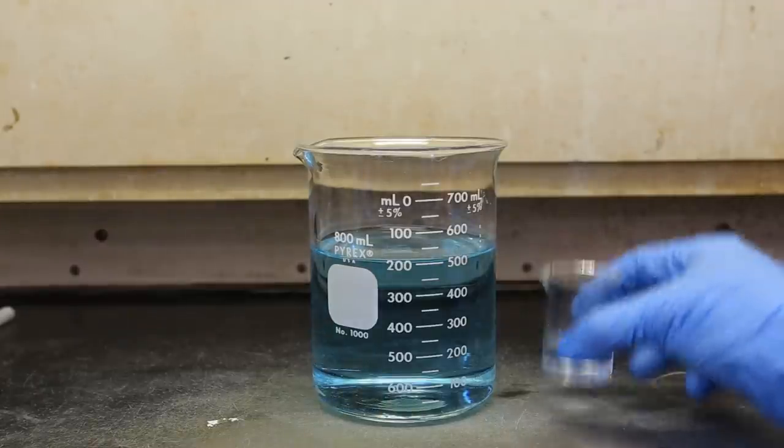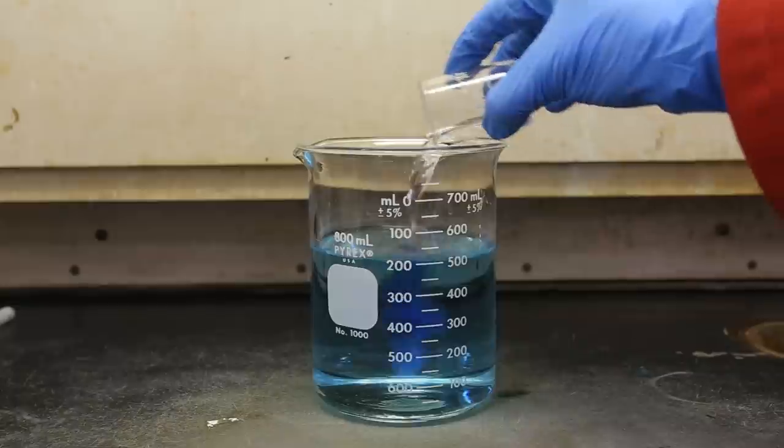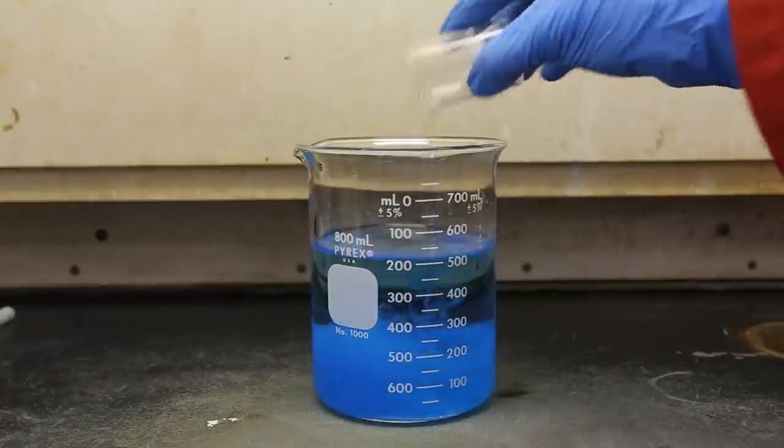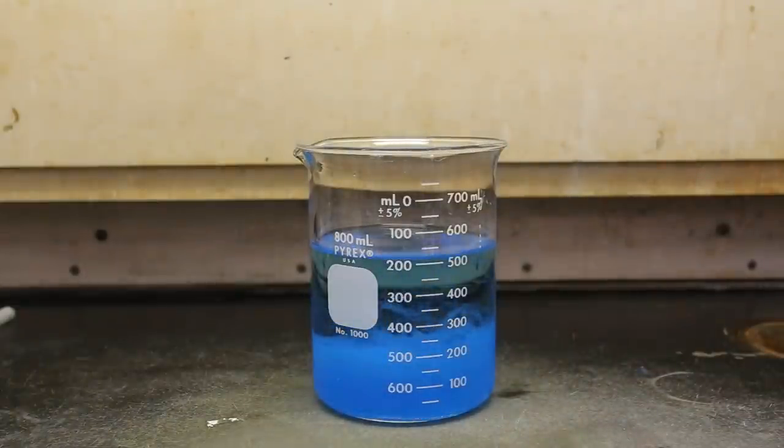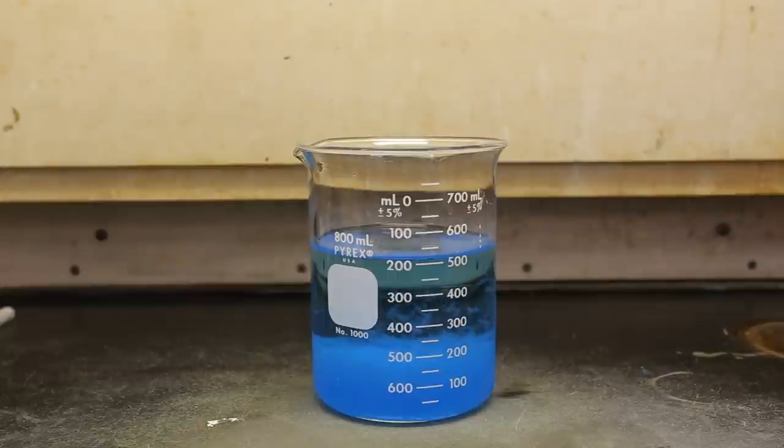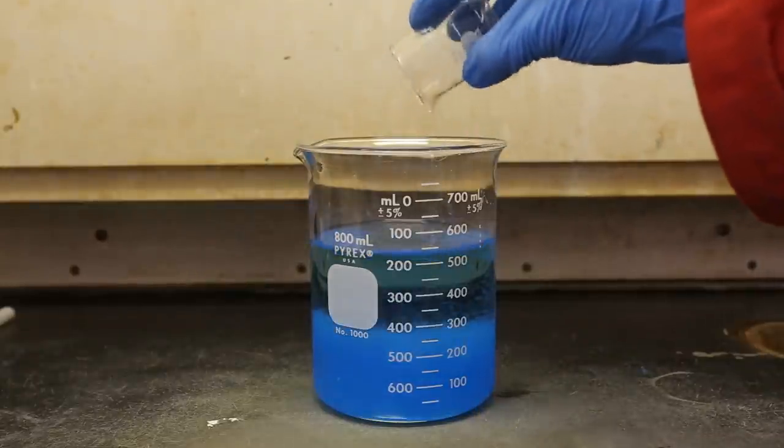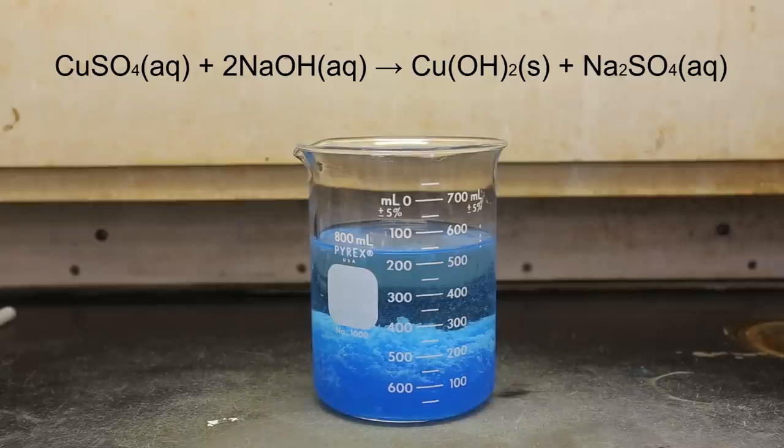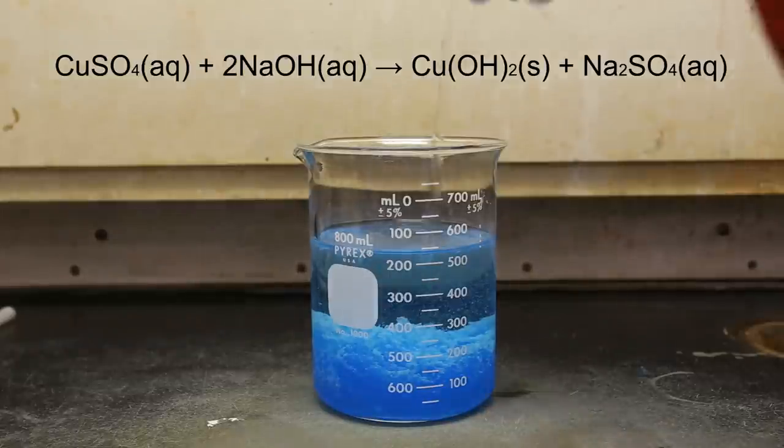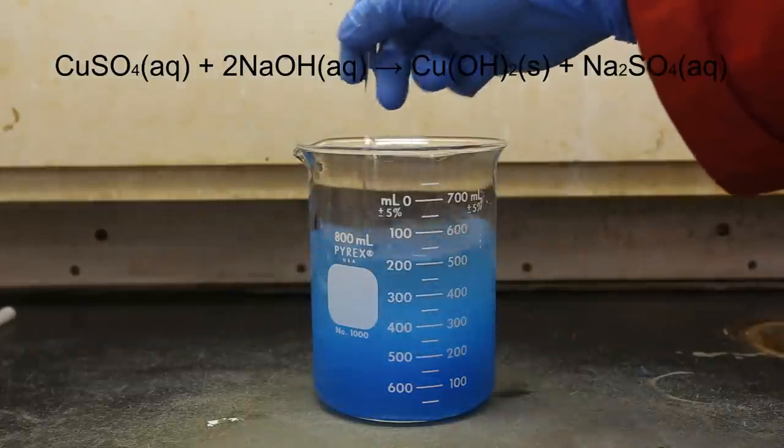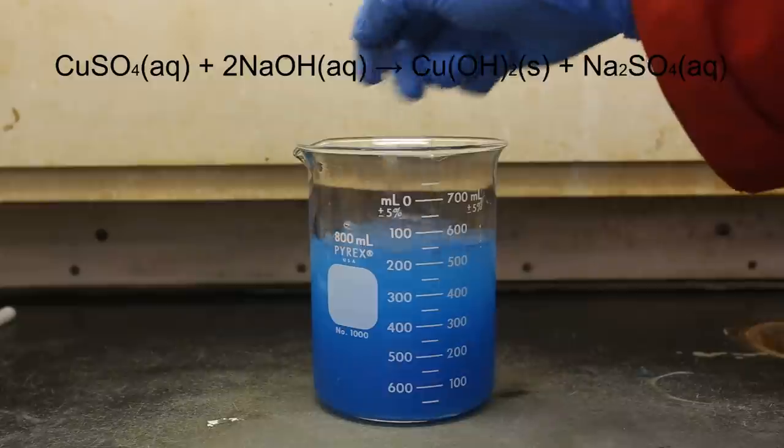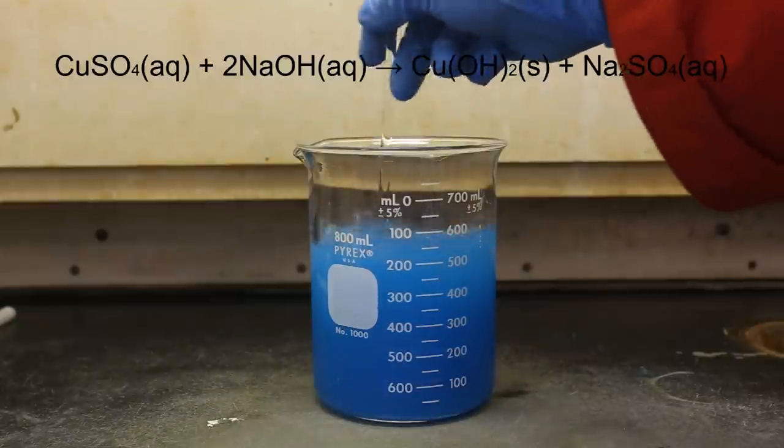Next, decant the sodium hydroxide solution into the copper-sulfate solution. Immediately, a nice blue copper-hydroxide precipitate should form. I washed the sodium hydroxide beaker with a small amount of water and added it to the solution. Next, mix the two solutions thoroughly. This serves to react as much sodium hydroxide as possible with the copper sulfate.